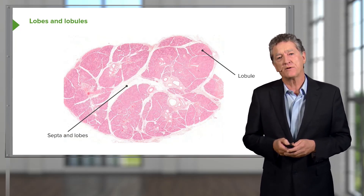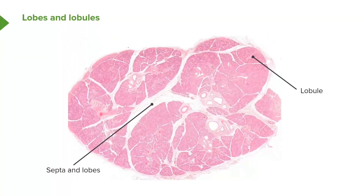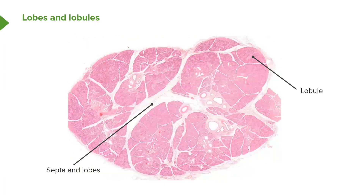Later on, we're going to learn that ducts and also blood vessels access the secretory units, first of all by coming in through these large connective tissue spaces between the lobes, and then through the smaller connective tissue spaces going to each lobule, and therefore to the secretory units.